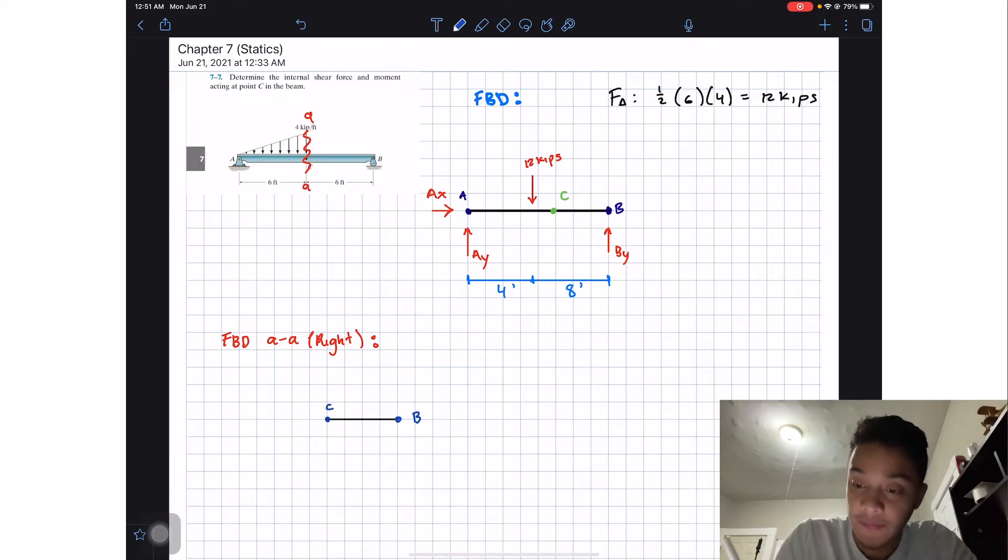If we do that, what do we have? In here I'll have my point B, this will be point C. Now since I'm applying the method of sections, when you section one beam like this, you will have a normal force Nc, a shear force Vc, and an internal moment Mc.